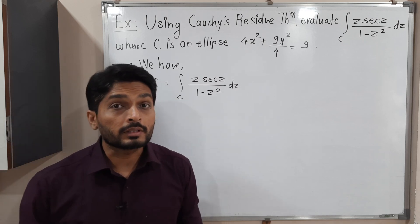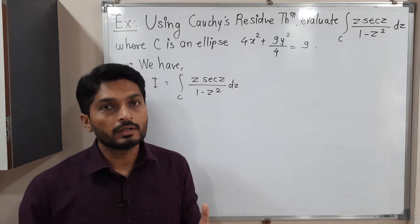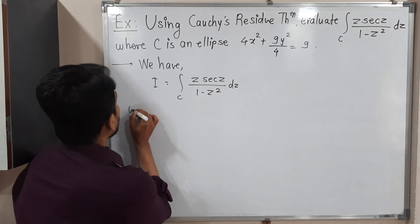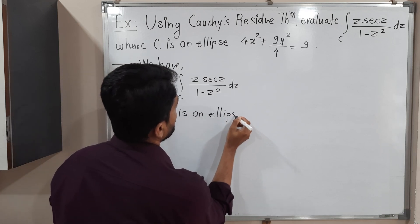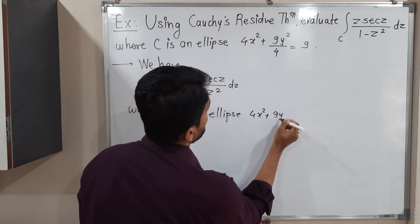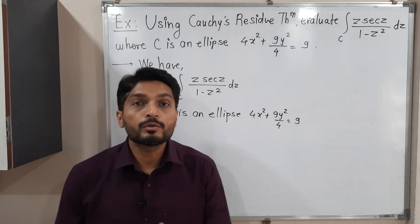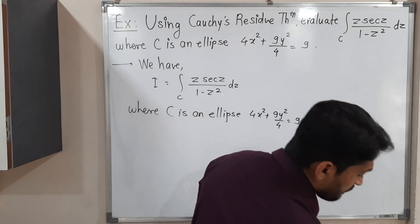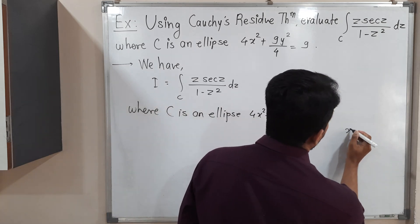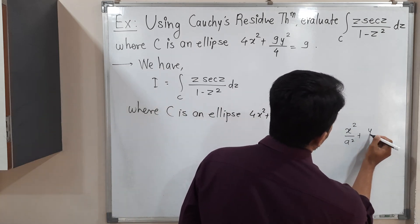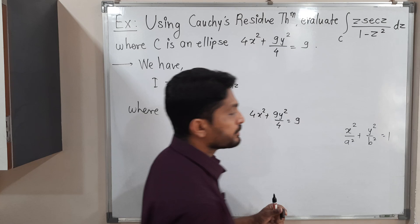The most important thing is the given curve c. Let us draw that curve and then we will solve the remaining part of the problem. c is an ellipse with equation 4x² + 9y²/4 = 9. This is the given equation of the ellipse and we have to draw it first. The problem is that the given equation is not in its standard form. The standard form of an ellipse is x²/a² + y²/b² = 1, meaning the right-hand side must be 1. But here we have 9 on the right-hand side.